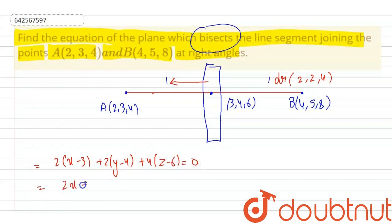It will be 2x plus 2y plus 4z, and calculating the constants: 2 times 3 is 6, 2 times 4 is 8, and 4 times 6 is 24, which gives us minus 38 is equal to 0. And this is our equation of plane.